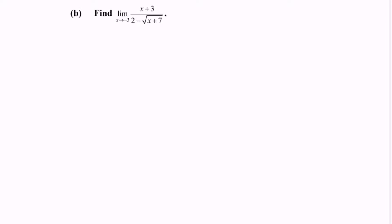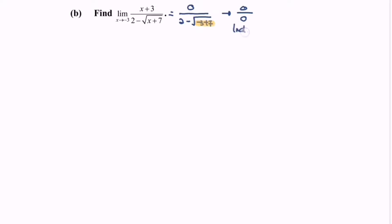Question B: find the limit when x approaches negative 3 for the function (x plus 3) over (2 minus square root of (x plus 7)). Substituting negative 3 into the function, we obtain 0 over (2 minus square root of (negative 3 plus 7)). Since negative 3 plus 7 equals 4, and the square root of 4 is 2, we get 2 minus 2, which gives 0 over 0 — the indeterminate form.